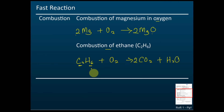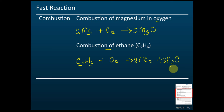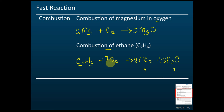We have six hydrogens in ethane, therefore we need three water molecules — because H₂O has two hydrogens, and three times two equals six. Then let's count the oxygens: here we have four oxygens from CO₂ and three from water, so totally we have seven oxygens, giving us 7/2 O₂.